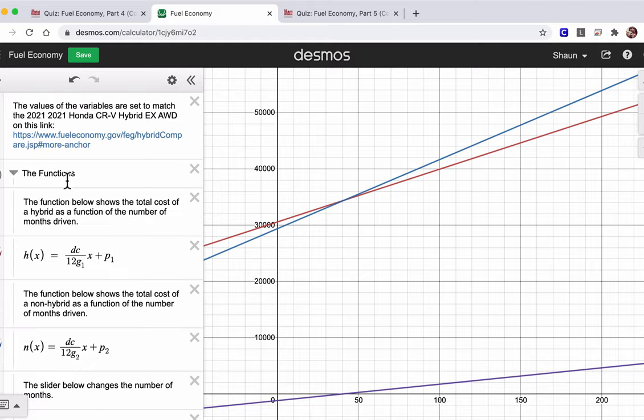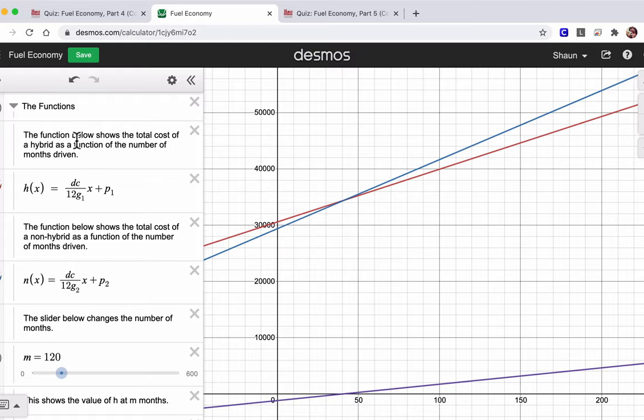So I'm going to walk you through this directly. First of all, it says the function below shows the total cost of a hybrid as a function of the number of months driven. So h of x. This is in math. You say h of x. X is the x-axis or number of months. H is for hybrid. So the hybrid, the cost of having the hybrid as a function of some amount of months is equal to this equation right here. And all this is saying is that P₁ is the cost. How much did the car cost? So here's the hybrid. It costs $30,560. And then as the number of months pass, you're going to use more and more gas. It's going to increase the cost of having the hybrid.